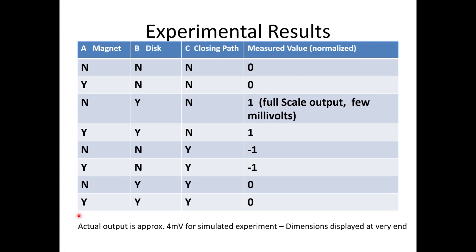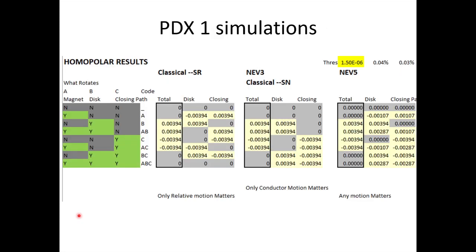And that was Faraday's Final Riddle: does the magnetic field rotate with the magnet? When you look at the simulations for the Paradox 1 done with the old Physics 1 software — classical, classical with a stationary field where the field rotates with the magnet, and where the field doesn't rotate — we got the same results as New Electromagnetism Version 3. That's why these are grouped into the same block. And this is New Electromagnetism V5 results. Let's divide everything by 3.94 millivolts to normalize so it's easier to look at this data.